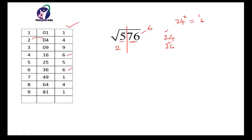Square of 24: 4 squared is 16, write 6 carry 1. Then multiply all three digits: 2 × 4 × 2 = 8, then 8 × 2 = 16, and 16 + 1 = 17, write 7 carry 1. Now square of the tens digit: 2 squared is 4, and 4 + 1 = 5. So it is 576, and therefore the square root of 576 is 24.